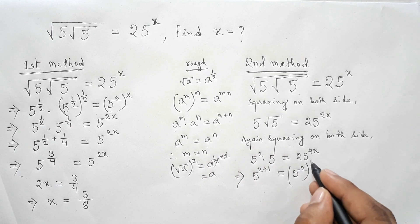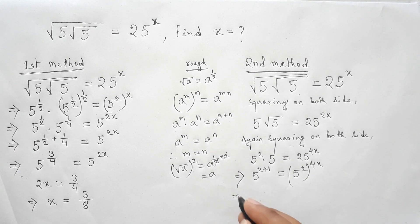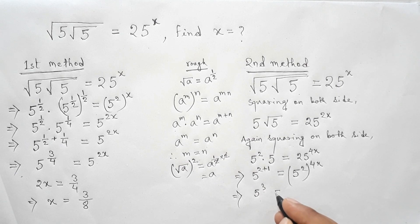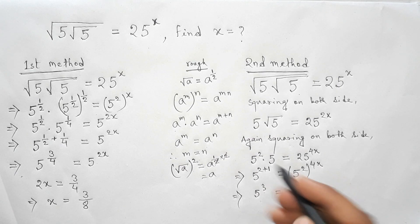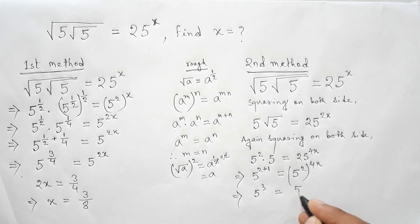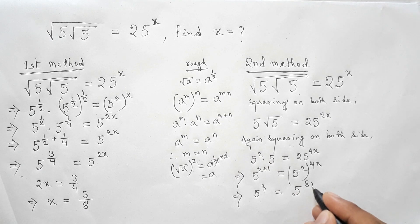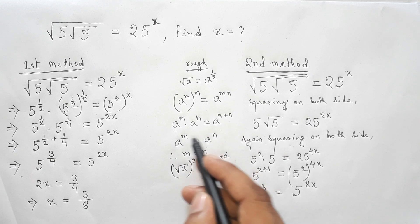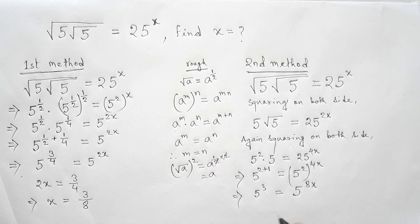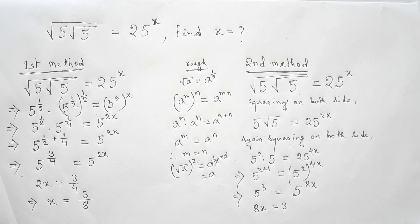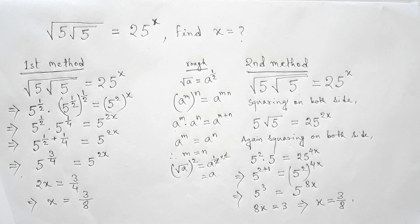Rewriting 25 as 5 squared in brackets to the power 4x, the right side becomes 5 to the power 8x. So 5 to the power 3 equals 5 to the power 8x, giving 8x equals 3, and therefore x equals 3 by 8. That's all — thanks for watching! If this video is helpful to you, please share it with your friends.